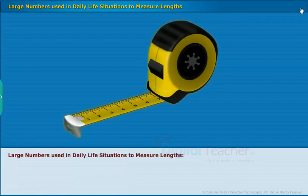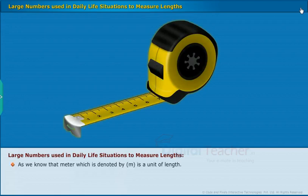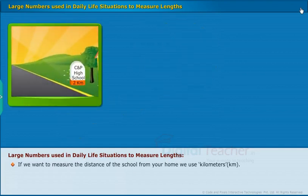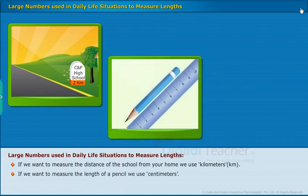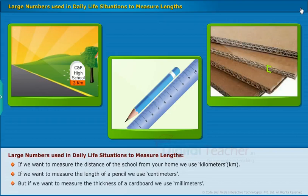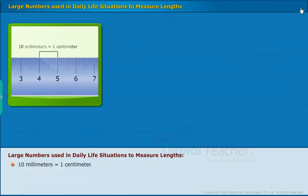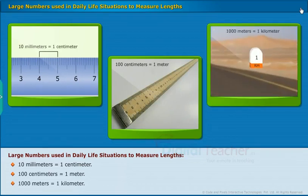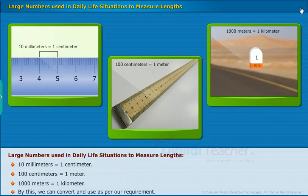Let us now learn about large numbers used in our daily life situations to measure lengths. As we know that meter, which is denoted by m, is a unit of length. If we want to measure the distance of the school from your home, we use kilometers. If we want to measure the length of a pencil, we use centimeters. But if we want to measure the thickness of a cardboard, we use millimeters. For example, ten millimeters is equal to one centimeter, hundred centimeters is equal to one meter, thousand meters is equal to one kilometer. By this, we can convert and use as per our requirement.